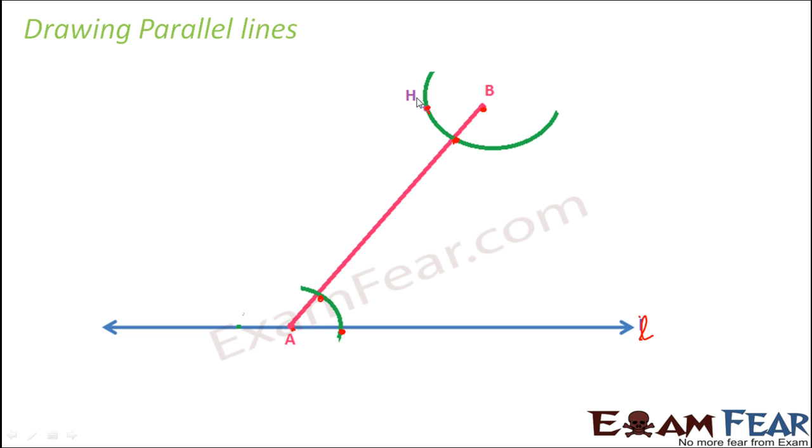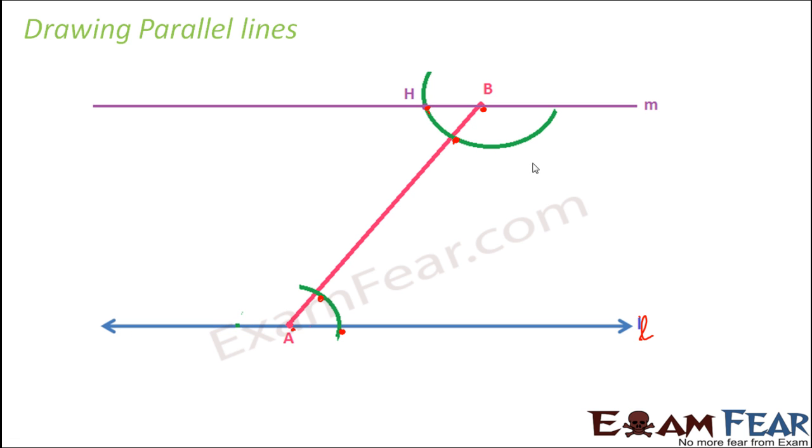Now what we do? All we need to do is we just join point B and H and we draw a straight line. So this line M is now parallel to L. Why is M parallel to L? That's because let's call this as angle 1 and this as angle 2. That's because angle 1 is equal to angle 2, which is nothing but alternate interior angles.